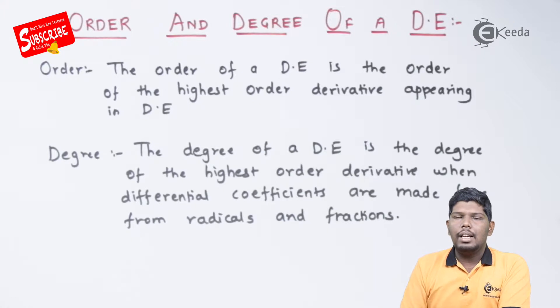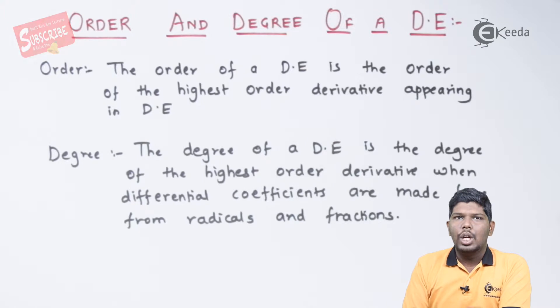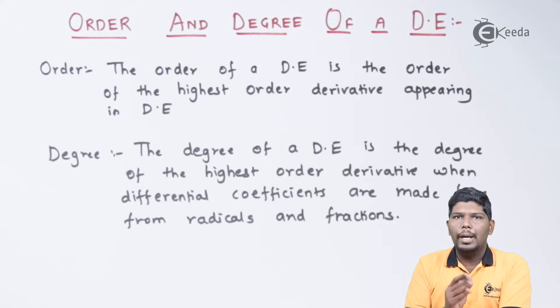For example, if in an equation we have d²y/dx² + dy/dx + y = 0, then the highest order derivative will be 2.